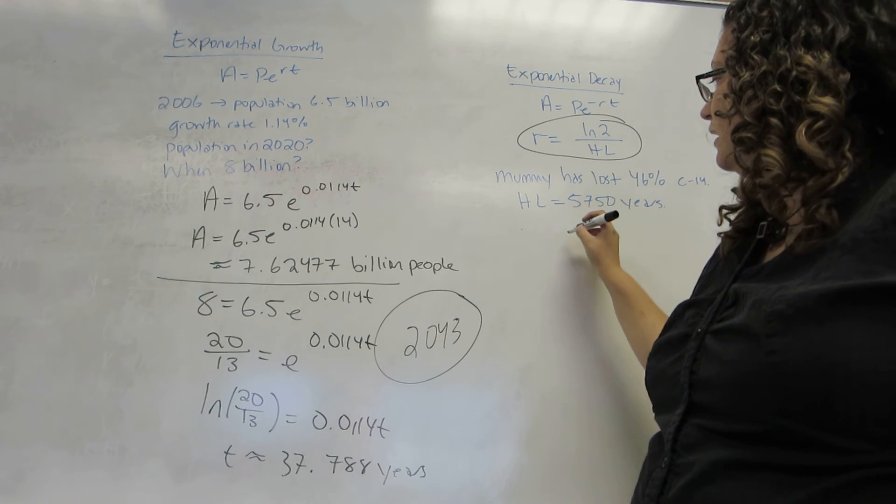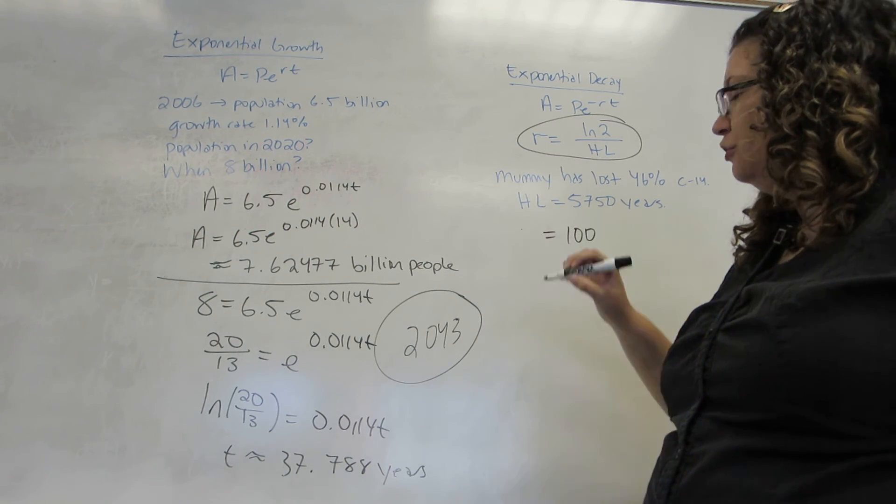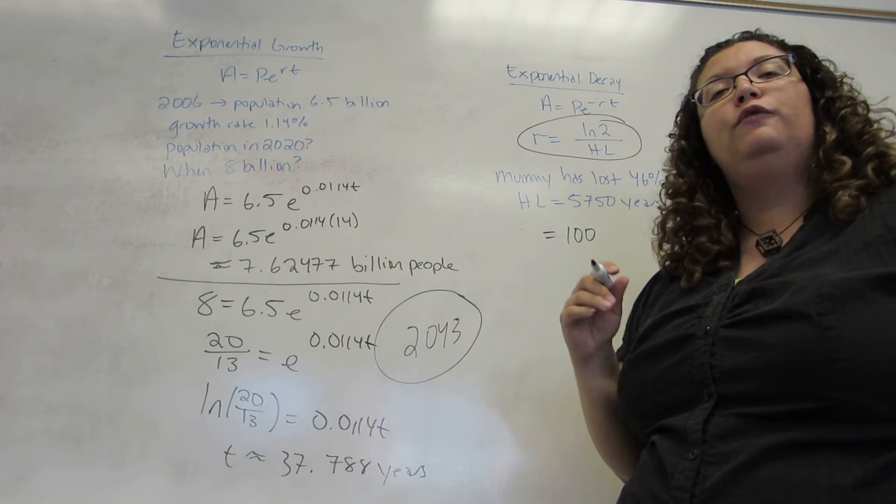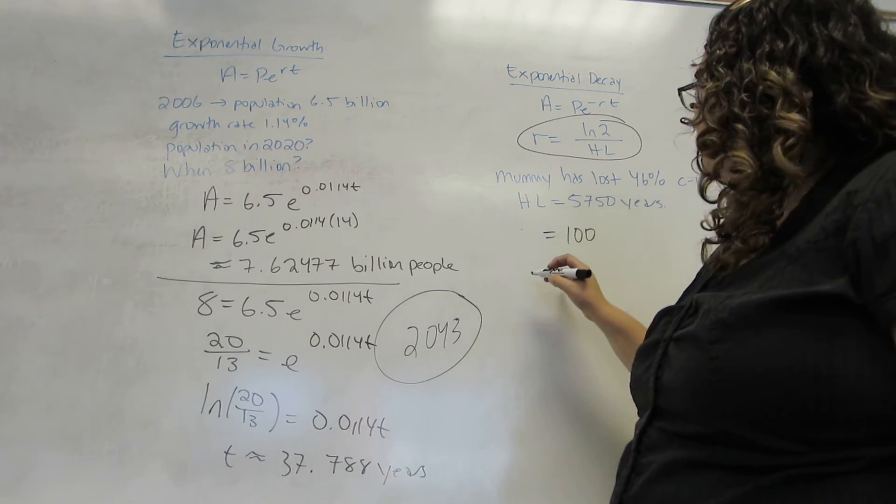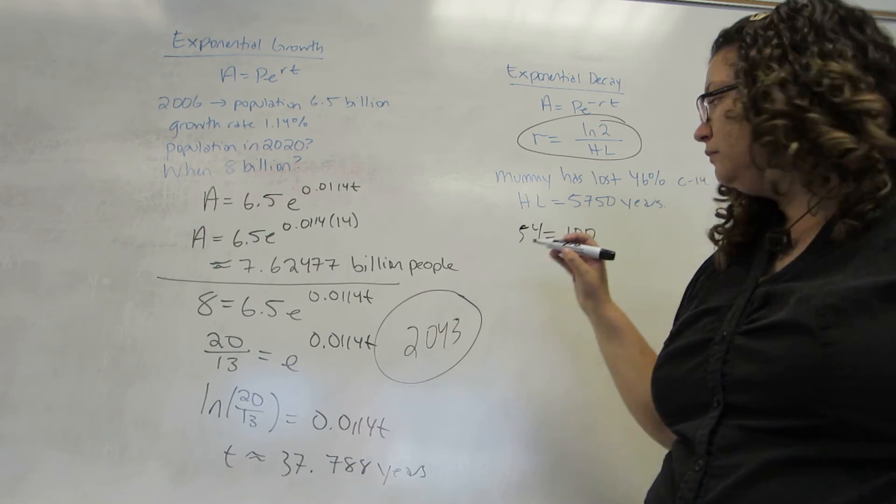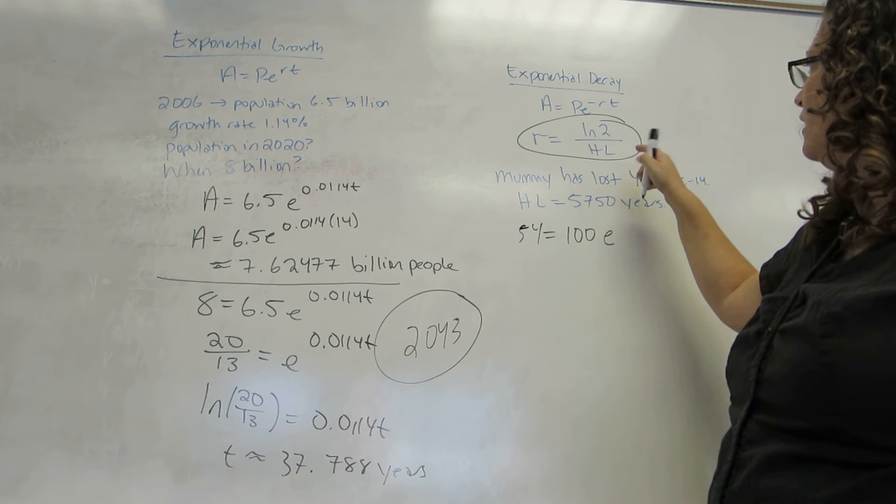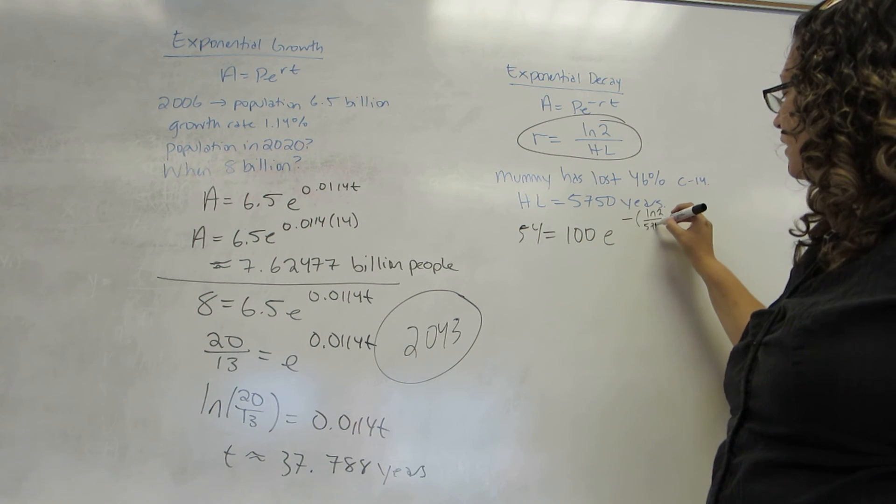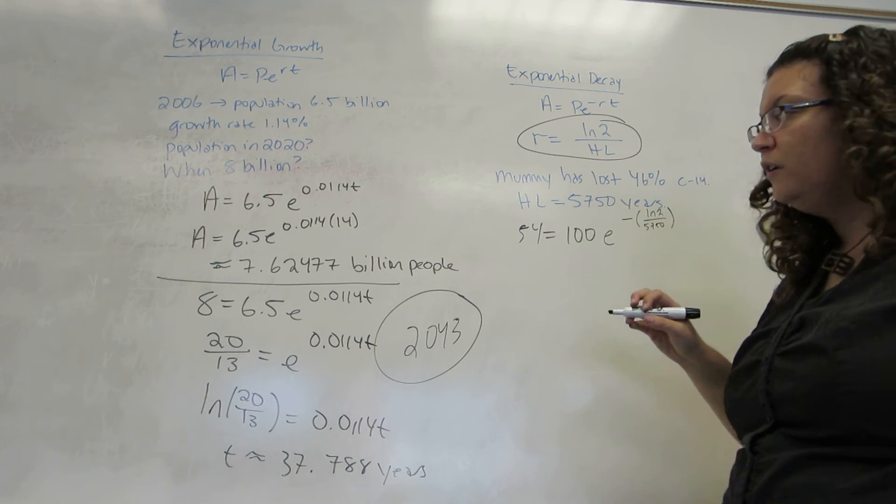So, I like to always say that it starts with 100%, so 100, and ending having lost 46%, meaning that 54 is left. And I plug this in. Now, my R is ln of 2 divided by that half-life. Don't forget the minus sign in front.